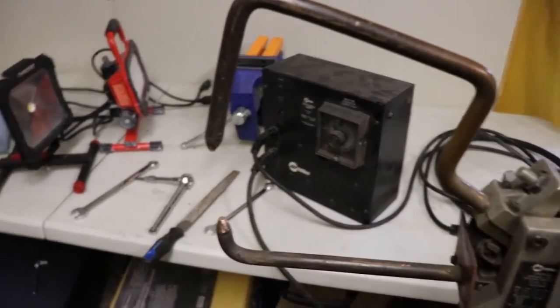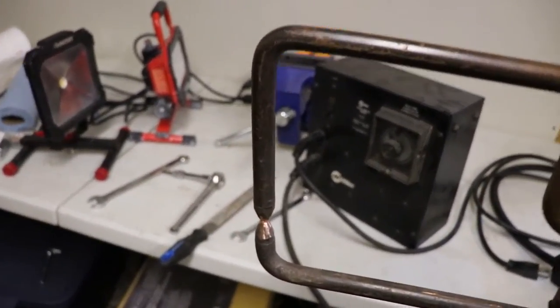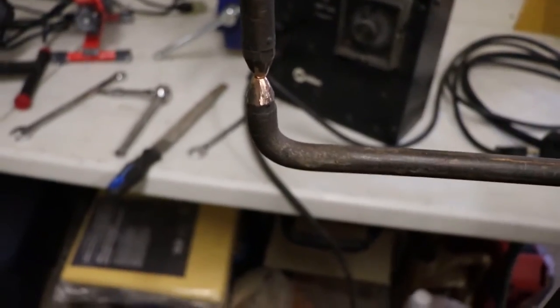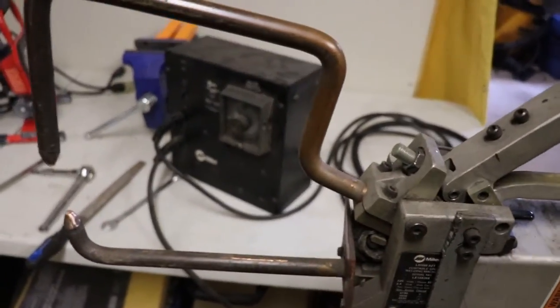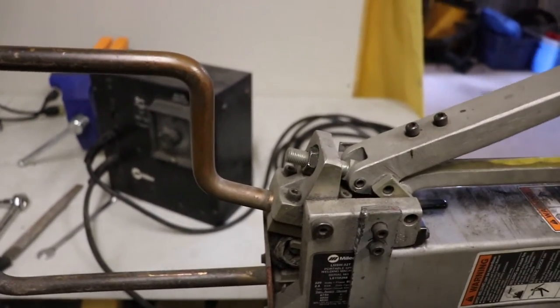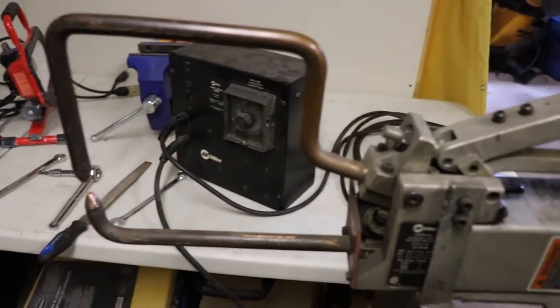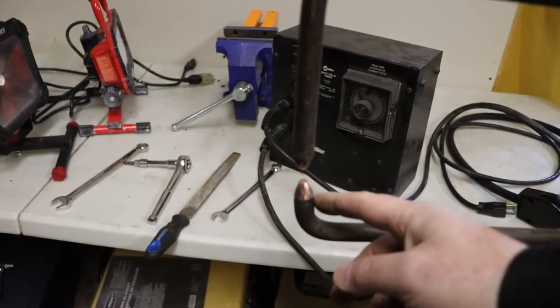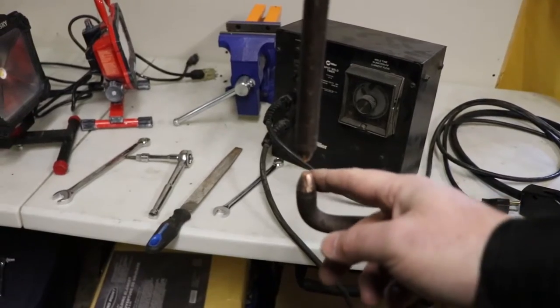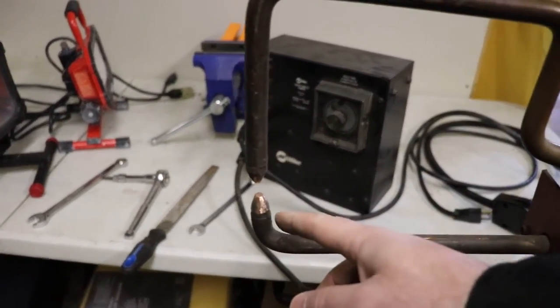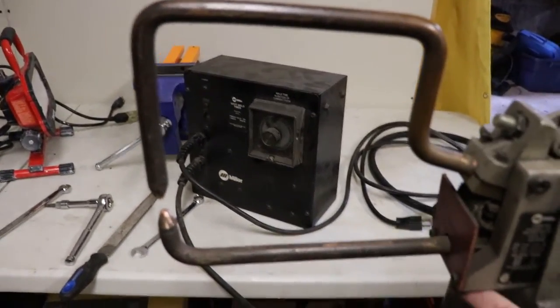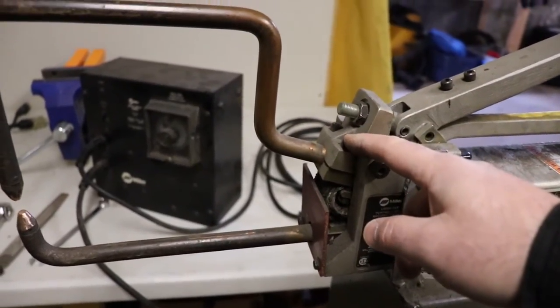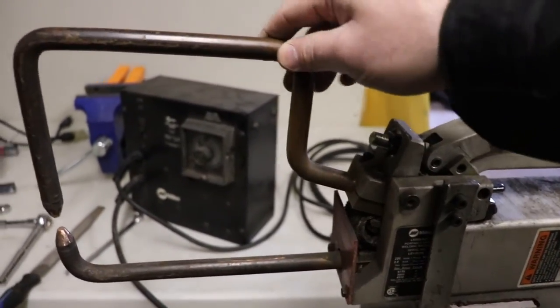All right, so I got the tips of the tongs dressed. They're making good contact now. They're round. It seems that I don't have as much pressure as I did before because I was obviously filing down the copper. I also found that one of the bottom tips was actually loose. So use a 9/16 wrench to tighten this because they're removable. I tightened the bottom and the top hex keys, and that's got everything firmed up.